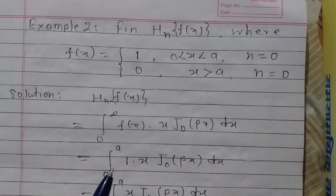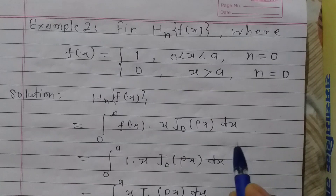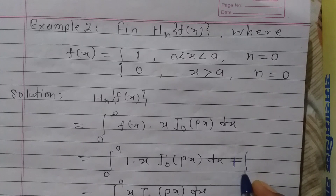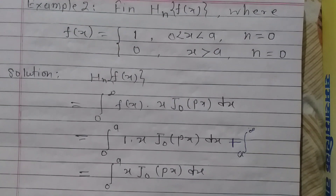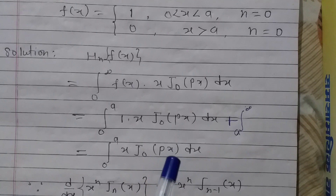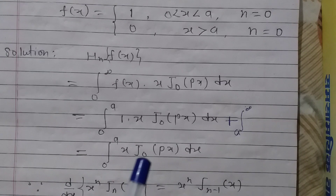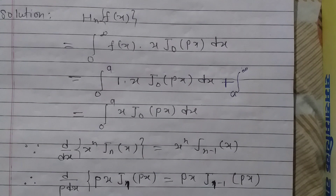The value of this integral can be written as integration from 0 to a of f(x) equals 1, plus another integral from a to infinity where the function is 0, so that part becomes 0. Now we have to find the value of the integral from 0 to a of x J₀(px) dx. For finding this integral, we use the recurrence relation: d/dx of x^n J_n(x) equals x^n J_{n-1}(x).